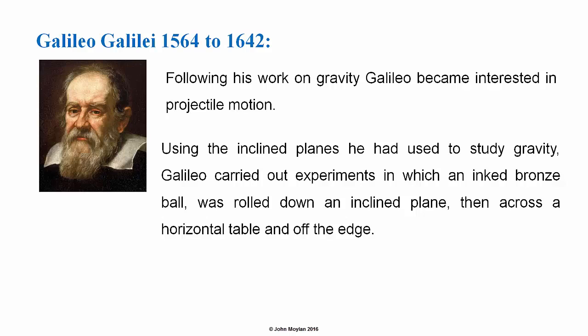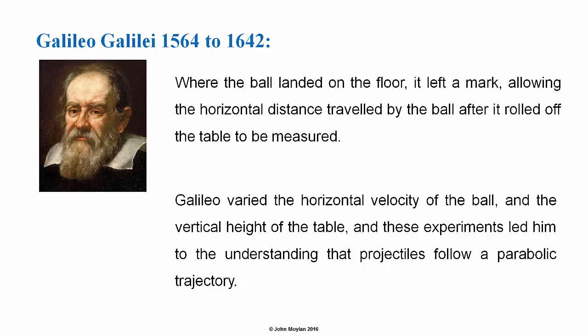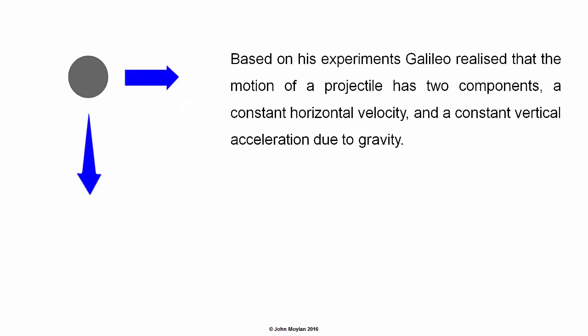Following his work on gravity, Galileo became interested in projectile motion. Using inclined planes that he had used to study gravity, Galileo carried out experiments in which an inked bronze ball was rolled down an inclined plane, then across a horizontal table and off the edge. Where the ball landed on the floor it left a mark, allowing the horizontal distance traveled by the ball after it rolled off the table to be measured. Galileo varied the horizontal velocity of the ball and the vertical height of the table.